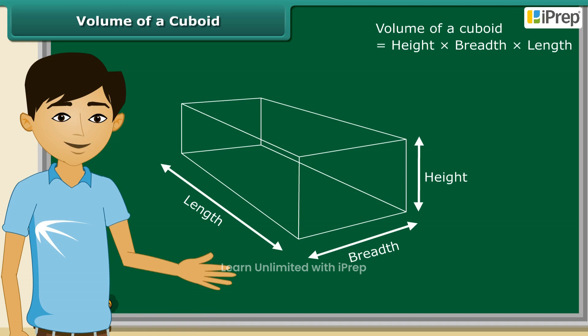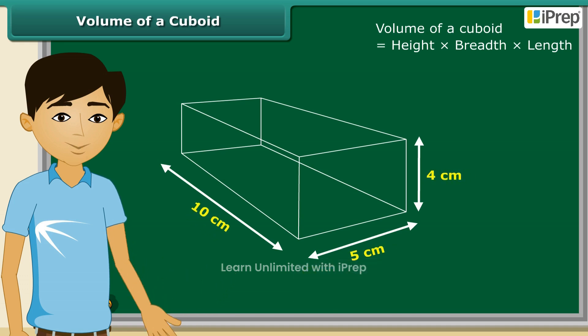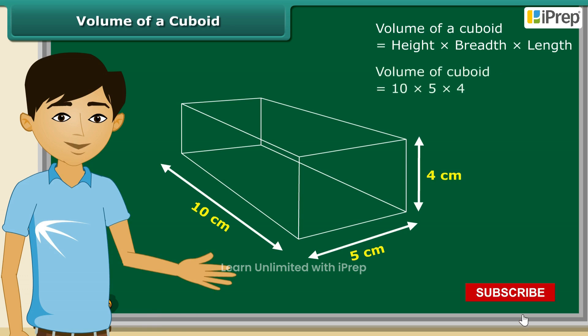Let us work out the volume of this cuboid. The three dimensions are given to us. Calculating the volume is fairly easy—just multiply all three numbers. So the volume of this cuboid is 200 centimeter cube.